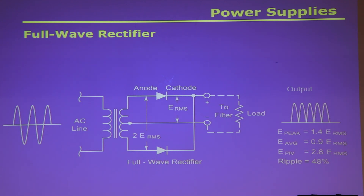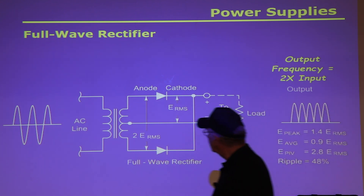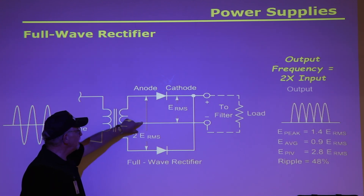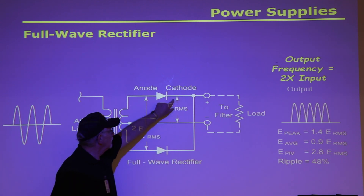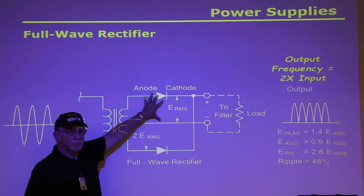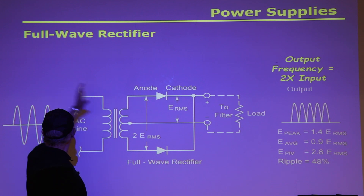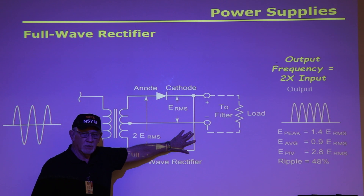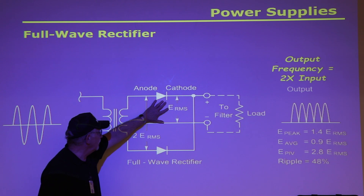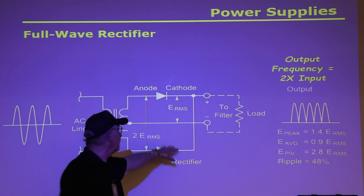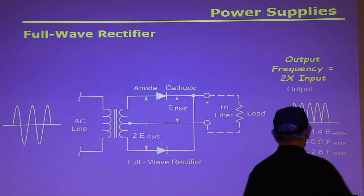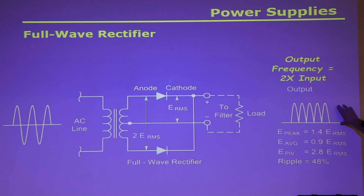A full-wave rectifier has two diodes and a center-tapped transformer. Half of the time one diode is conducting; when the signal turns around and goes below, the other diode conducts. So for half the cycle you're conducting through one diode, and the other half through the other diode — you're getting both sides of the waveform, but both are DC. The output frequency is two times the input, and the ripple is only 48% now — a much cleaner signal.